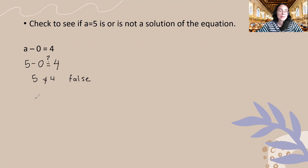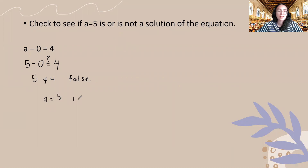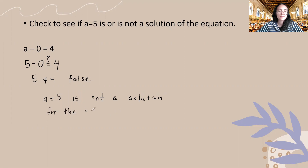So my statement is going to be: a is equal to five is not a solution for the equation a minus zero is equal to four.